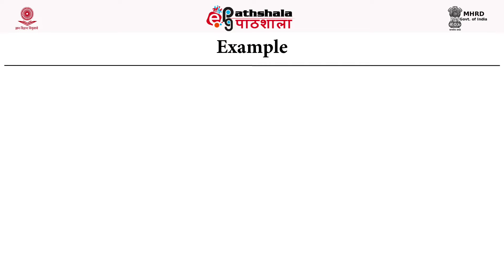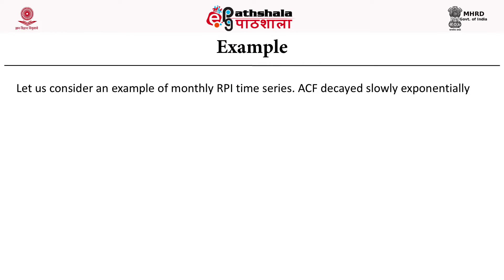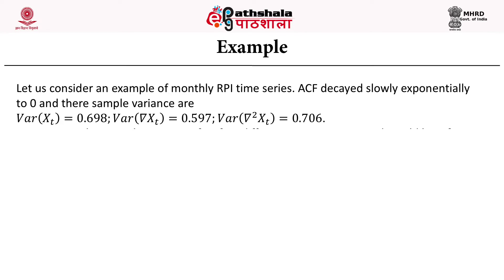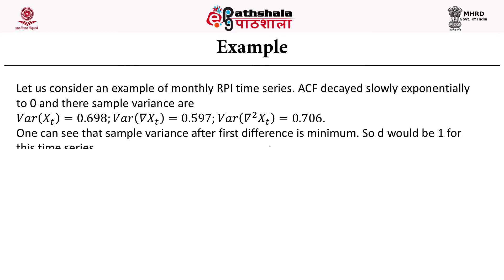For example, consider a monthly RPI (retail price index) time series where the ACF decays slowly and exponentially to 0. The sample variances are: variance of X_t = 0.698, variance of ∇X_t = 0.597, and variance of ∇²X_t = 0.706, where ∇ represents X_t minus X_{t-1}. Since the sample variance after first differencing is minimum, D would be 1 for this time series.